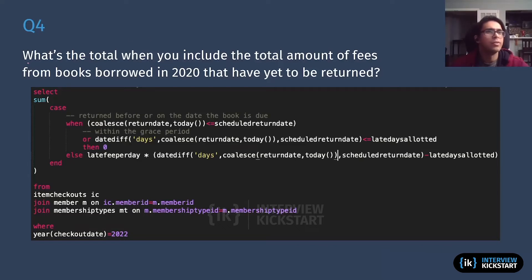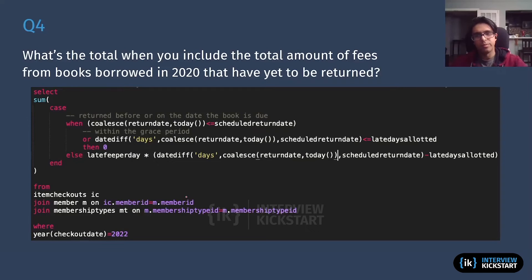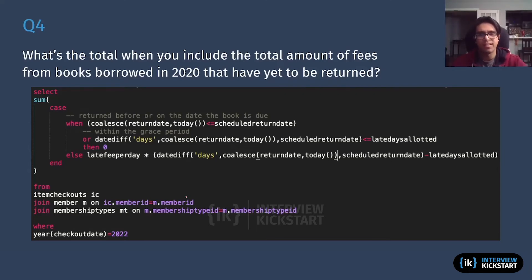Building on the previous question: what's the total late fees from books borrowed in 2020 that have yet to be returned? In the previous query we filtered for return date IS NOT NULL, but now we're asking about books that are still out there. To calculate the late fee we need to know when the book was returned, since you charge per day. What we can do is assume the book is going to be returned today. If I were doing this in an actual interview I would communicate that assumption to the interviewer, taking them through the thought process.